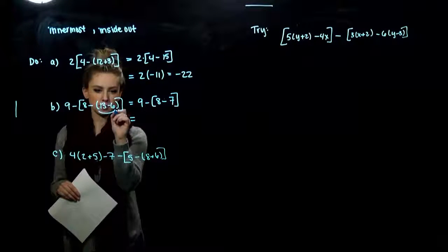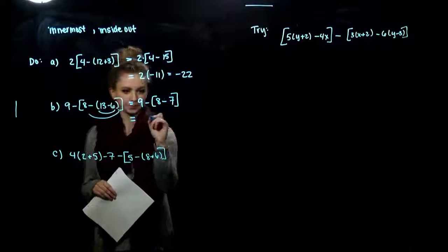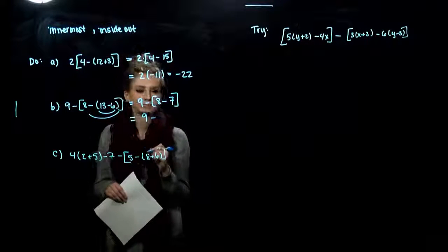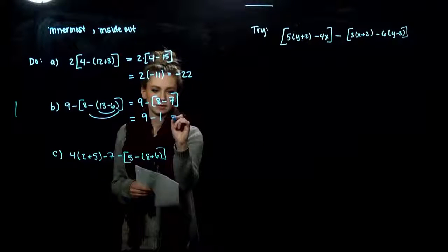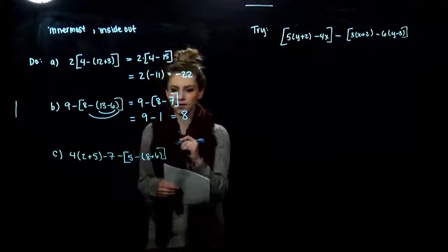So again, we worked on the innermost. Now we'll look a little bit larger. Combining 8 minus 7, what are we left with? 1. Subtraction, we can go straight across. We're left with 8.